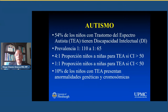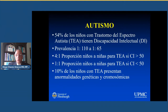Algo que nos puede poner a pensar en la incidencia genética es la diferencia por género. Hay una proporción mayor de autismo en niños que en niñas, específicamente si el coeficiente intelectual es mayor de 50, la proporción es de 4 a 1. Si el coeficiente intelectual es menor de 50, es decir en niños con discapacidad intelectual, la proporción tiende a igualarse. El 10% de los niños con trastorno del espectro autista presentan anormalidades genéticas y cromosómicas, y es muy posible que el número sea mayor, pero hoy no tenemos todas las herramientas. Cuando yo estaba haciendo mi fellowship en 2005 no teníamos estudios de microarray; hoy en día los tenemos y esto ha aumentado el diagnóstico de anormalidades genéticas.